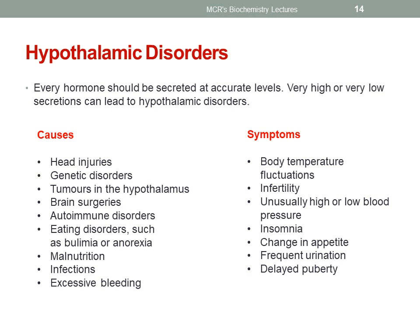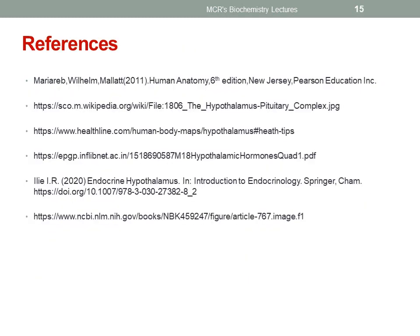infertility, unusually high or low blood pressure, insomnia, change in appetite, frequent urination and delayed puberty. Hope you would have got a clear picture about the hypothalamic hormones. Thank you.